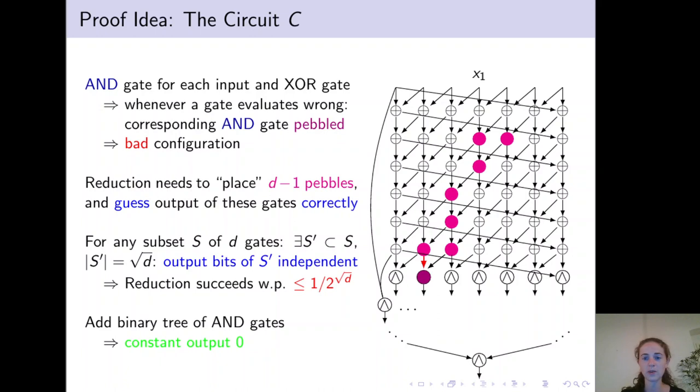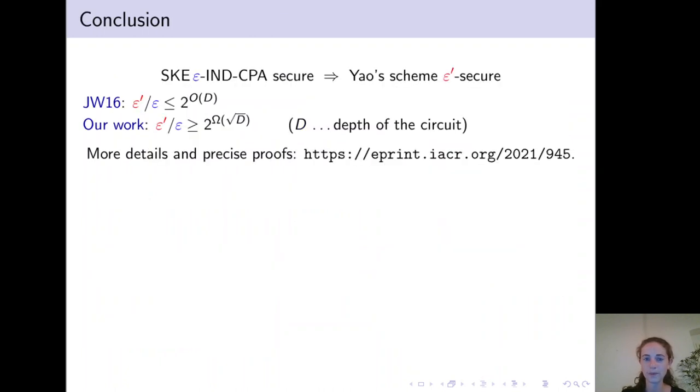I hope I could give you some intuition on the proof. And to conclude, we considered black box reductions that prove security of Yao's scheme based on the security of the underlying encryption scheme. And starting from the upper bound by Jafargholi and Wichs that is exponential in the depth of the circuit, we prove a lower bound that is exponential in square root of the depth of the circuit.